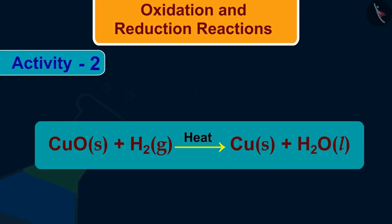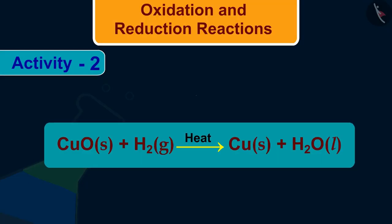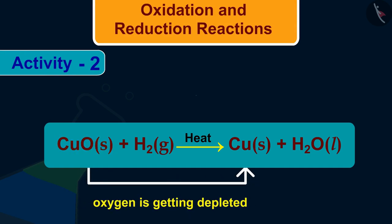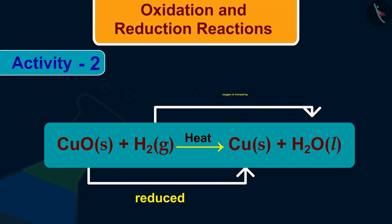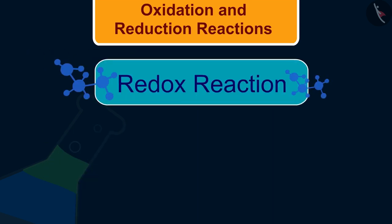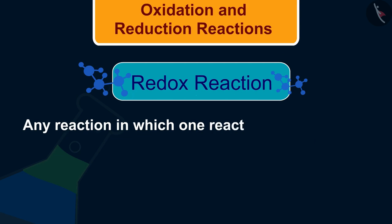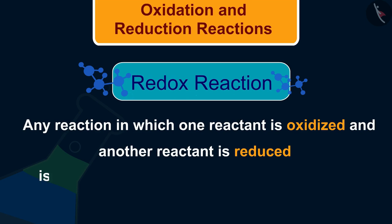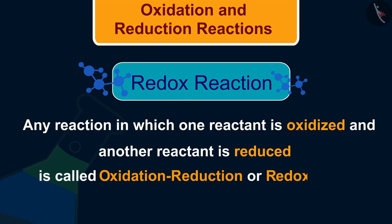If we look closely at this reaction, we find that oxygen is getting depleted from copper oxide — hence it is reduced — and oxygen is increasing in hydrogen, so hydrogen is oxidized. Any reaction in which one reactant is oxidized and another reactant is reduced is called an oxidation-reduction or redox reaction.